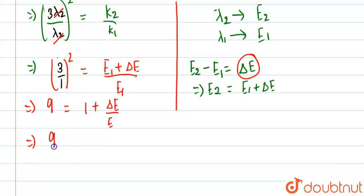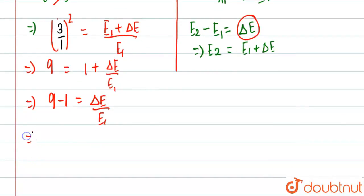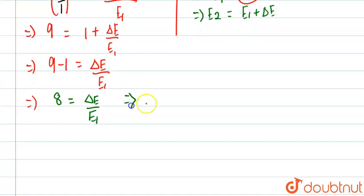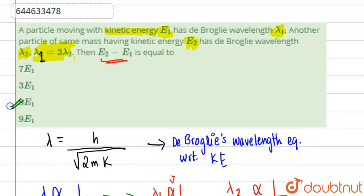From 9 - 1 = ΔE / E₁, we get 8 = ΔE / E₁, so ΔE = 8 × E₁. That is our final answer, which corresponds to option number C.